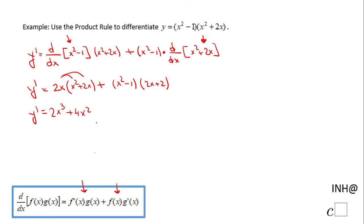And here I'm going to use FOIL plus 2x cubed plus 2x squared minus 2x and minus 2.